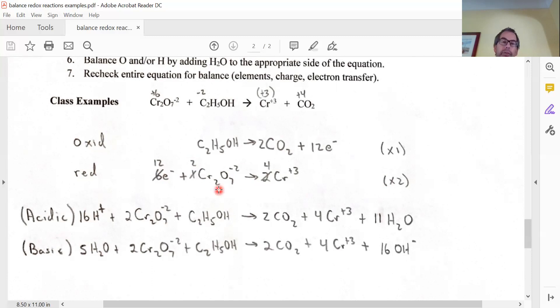So essentially, two times two is four chromiums at plus six are going to four chromiums at plus three. That would be a movement of 12 electrons. The electrons given off have to equal the electrons gain to make this thing work.